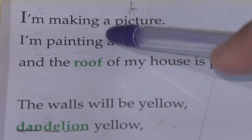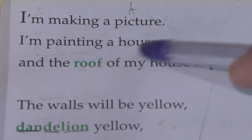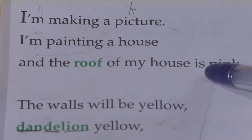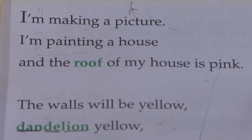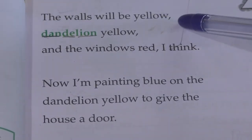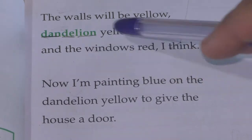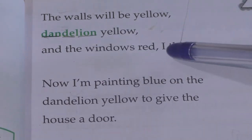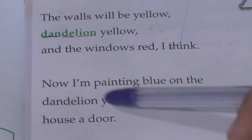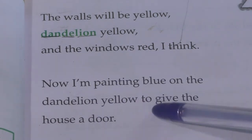I am making a picture, I am painting a house, and the roof of my house is pink. The walls will be yellow — dandelion yellow — and the windows red, I think. Now I am painting blue on the dandelion yellow to give the house a door.